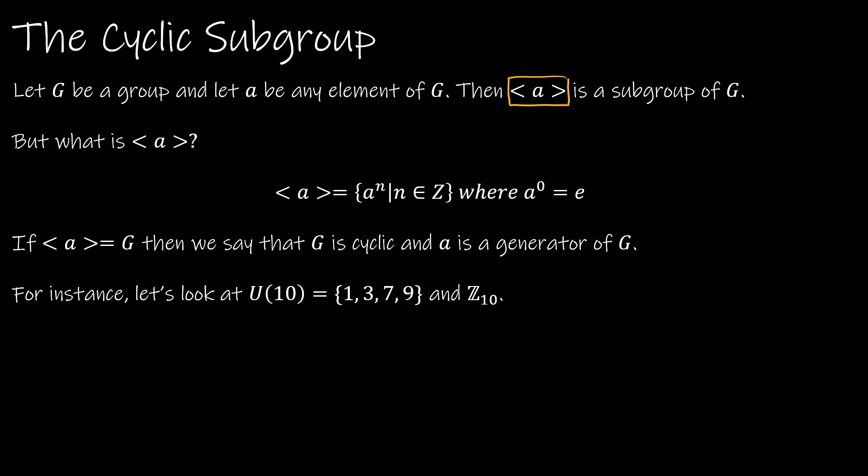We already know the group U(10). So remember, the group U(10) is elements that are less than 10 but relatively prime to 10. So essentially, we're saying that 1 would be 1 to the zero, 1 to the first, 1 to the second, and so on and so on.